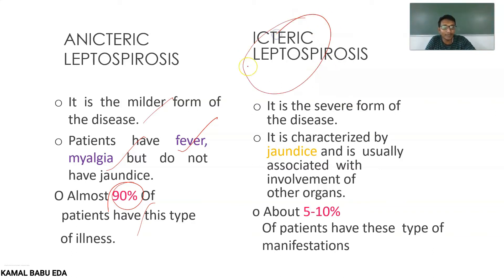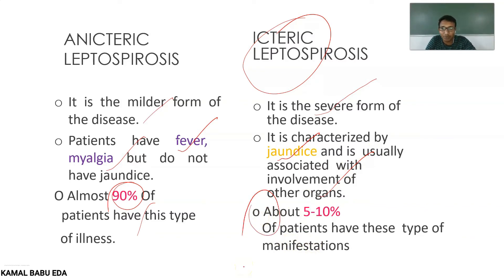The icteric condition indicates a severe form of the disease, mainly characterized by jaundice associated with involvement of other organs. About 5 to 10 percent of patients will have this type of clinical manifestation. Most leptospirosis patients will be in an anicteric condition, but about 5 to 10 percent will enter into icteric leptospirosis.